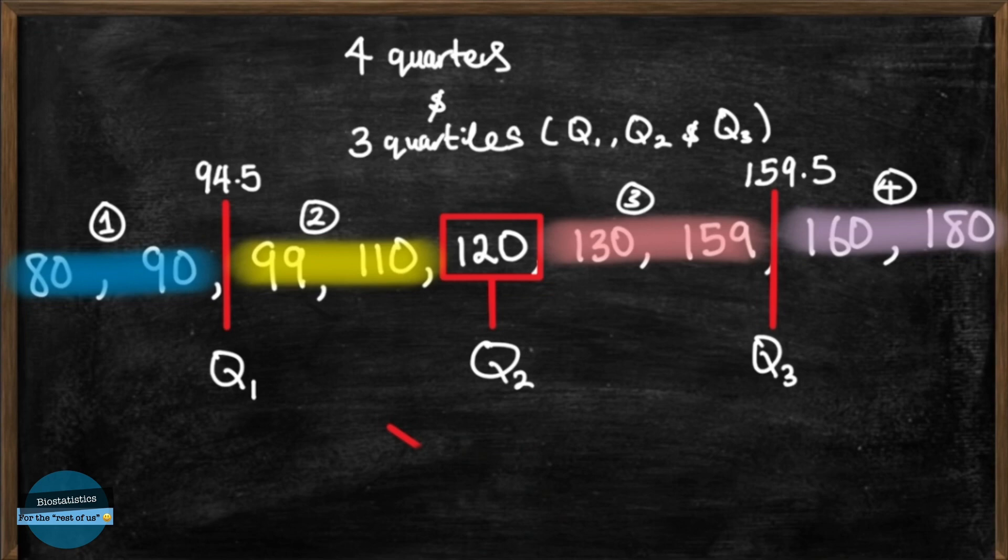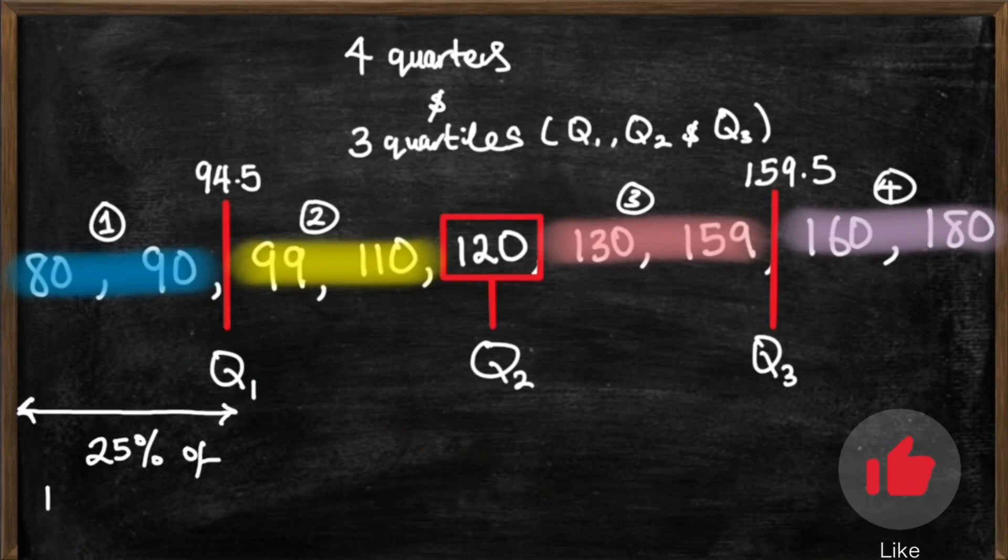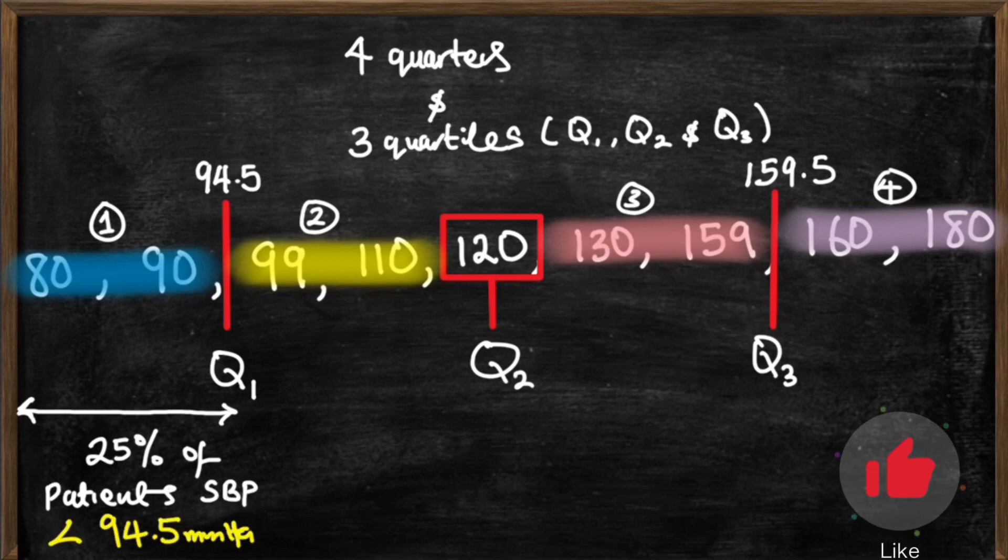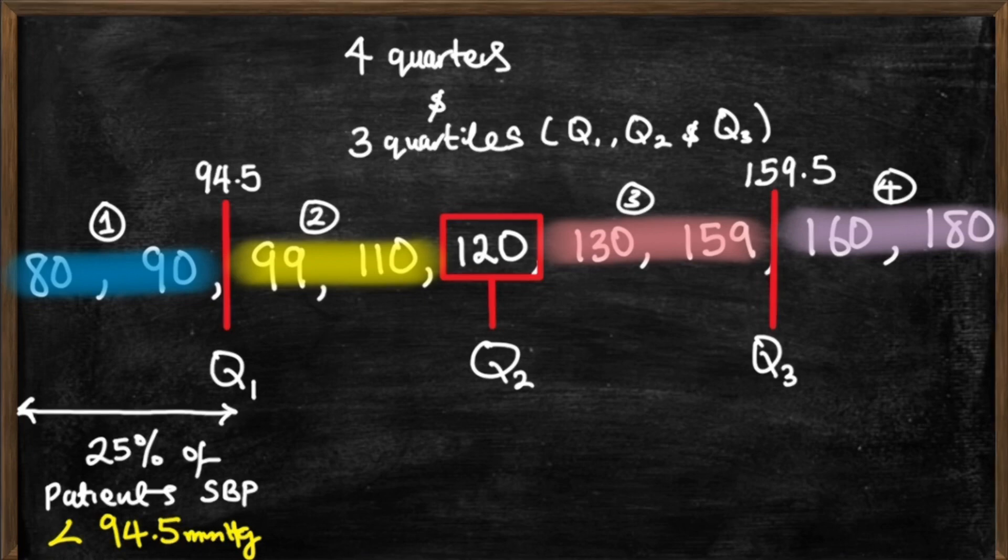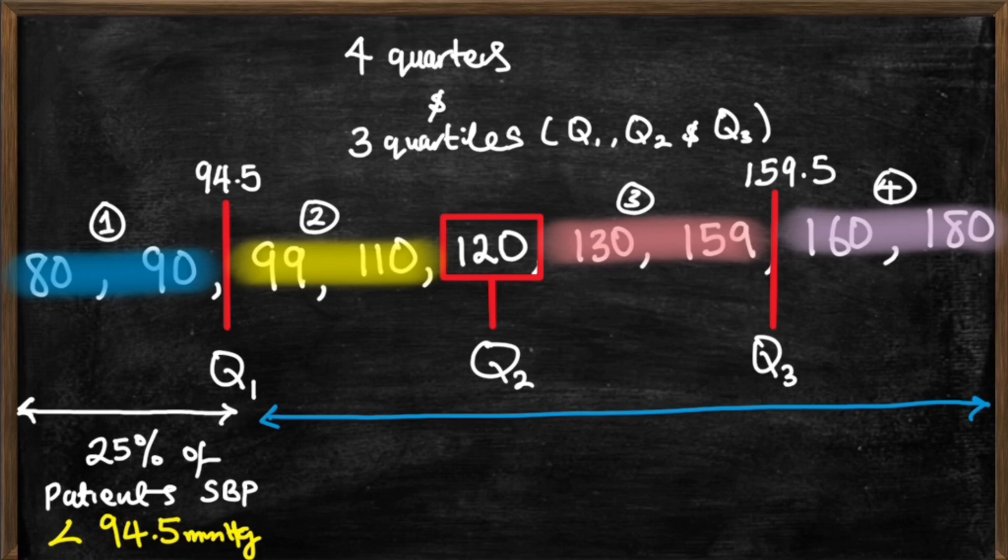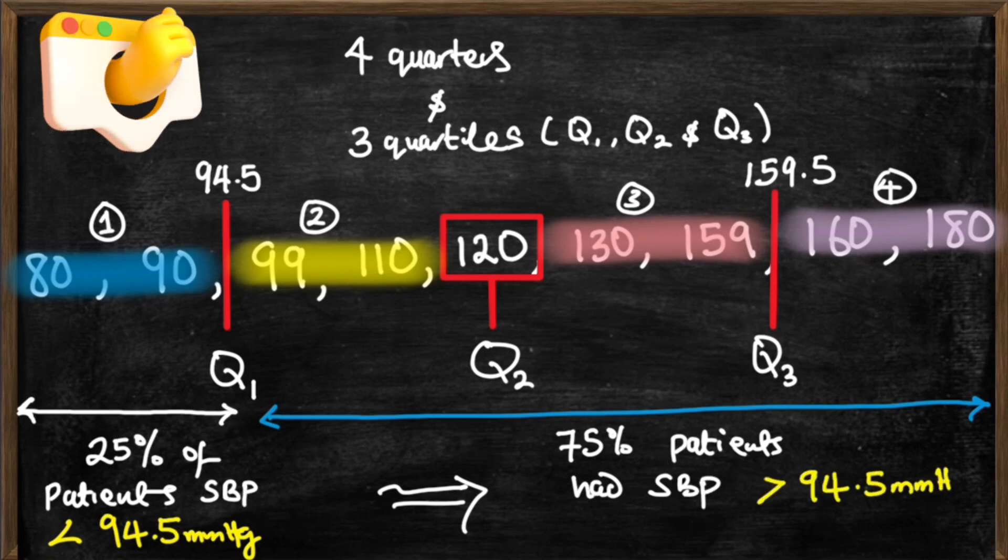Now putting this into the context of our data, the first quartile Q1, which is 94.5 millimeters of mercury, means that 25% of our patients that attended the clinic have a systolic blood pressure lower than 94.5 millimeters of mercury. Can we put this in another way? Yes, of course. 75% had a systolic blood pressure higher than 94.5 millimeters of mercury.